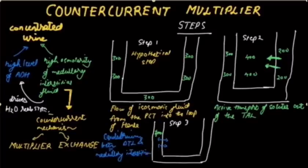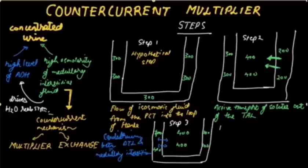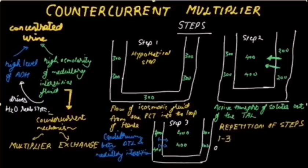These steps are repeated again and again. So from 400, the osmolarity increases to 500, 600, and so on until 1200 milliosmoles per litre — or whatever is required — is reached. There is an incremental increase in the osmolarity of the medullary interstitium. The thick ascending limb is capable of creating only a 200 milliosmoles per litre concentration gradient. Thus the counter current multiplier mechanism establishes a high osmolarity in the medullary interstitium, which enables water reabsorption in the presence of ADH.